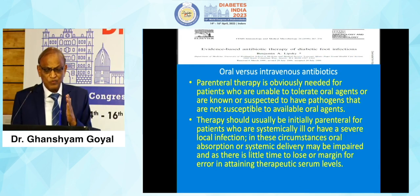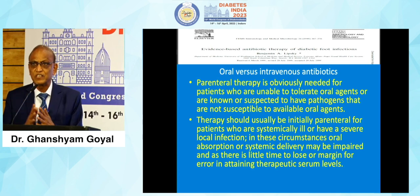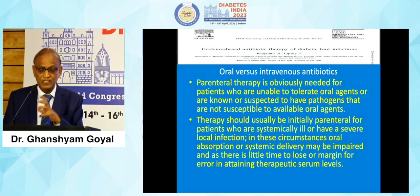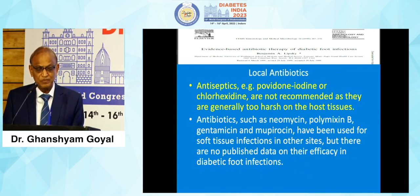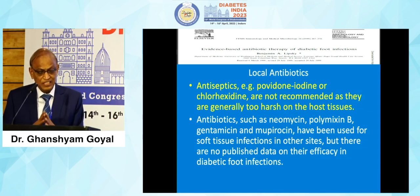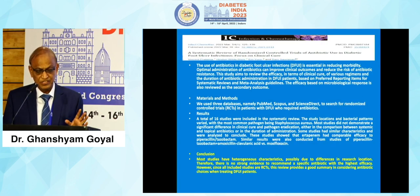Regarding oral versus IV antibiotics: parenteral therapy should obviously be started in all severe infections and some moderate infections. Once the patient is able to tolerate orally and an oral antibiotic is available, you can switch. As for local antibiotics — povidone iodine, chlorhexidine, or any topical antibiotics such as neomycin, polymyxin B, mupirocin — these should not be used. There is no evidence or published data supporting any role for these antibiotics in diabetic foot infections.